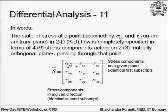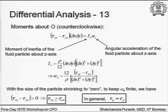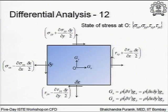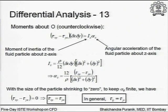Going back to the stress tensor, the off-diagonal elements occur in pairs — tau_xy and tau_yx, tau_xz and tau_zx, tau_yz and tau_zy — and we have just proved these are equal. Therefore, the stress tensor has only six independent entries, not nine. This is useful information.